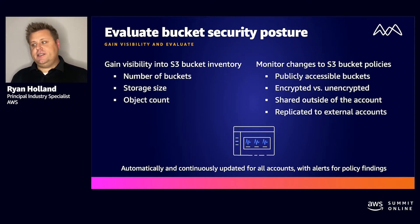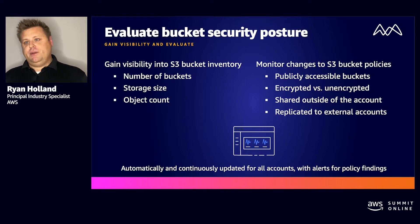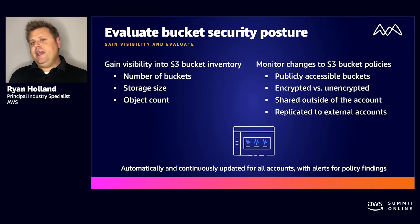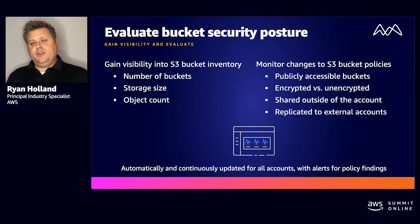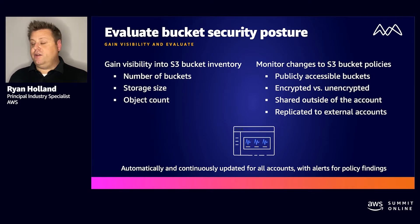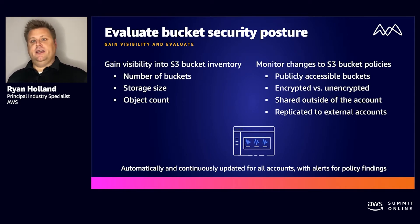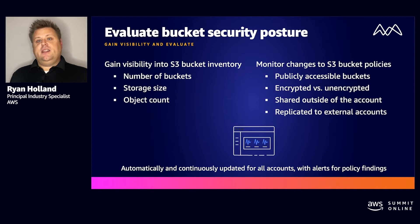Things like how many buckets are publicly accessible, how many have or do not have default encryption policies, how many are accessible or shared to an account outside of your organization, and whether any buckets are replicating to external accounts. Macie collects all this information and gives you a dashboard summarizing it. More importantly, we also generate security findings that go out through EventBridge and are viewable in Security Hub if any of these settings change — such as a bucket being made public, replicated externally, or encryption being disabled.